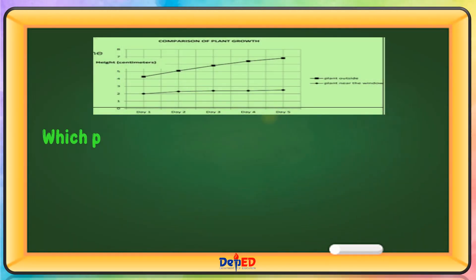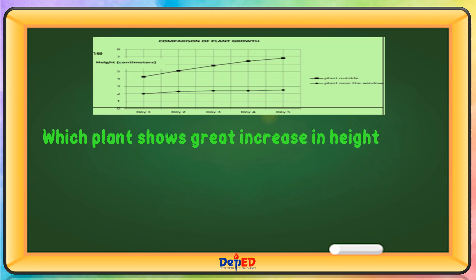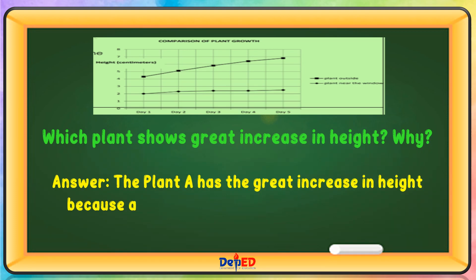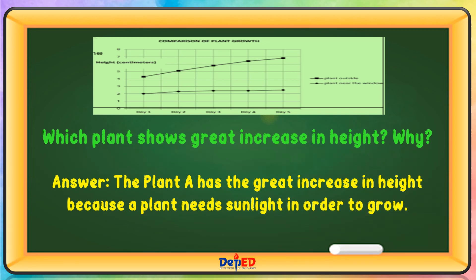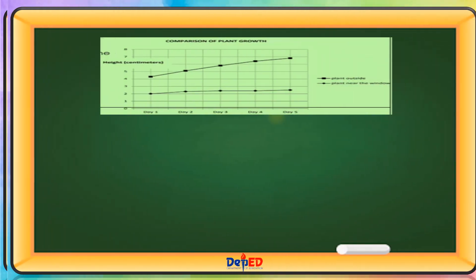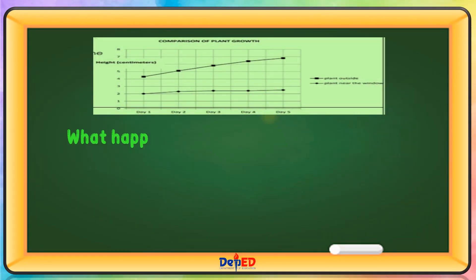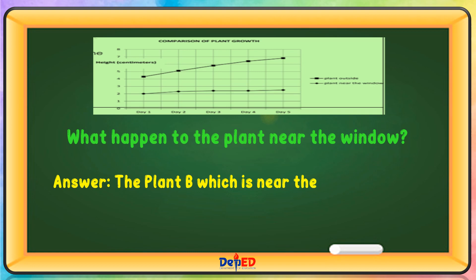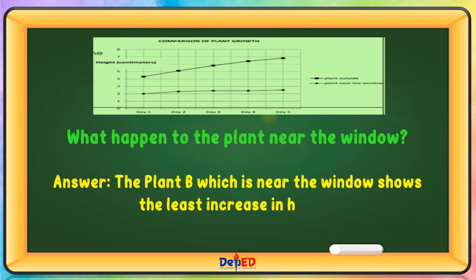Which plant shows greater increase in height? Plant A has the greater increase in height because a plant needs sunlight in order to grow. What happened to the plant near the window? Plant B, which is near the window, shows the least increase in height.